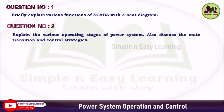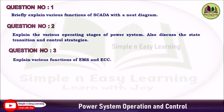Question 2 (Priority 2): The various operating stages of a power system — draw the state transition diagram and explain the control strategies. The diagram includes normal state, alert state, emergency state, extremis state, and restorative state.